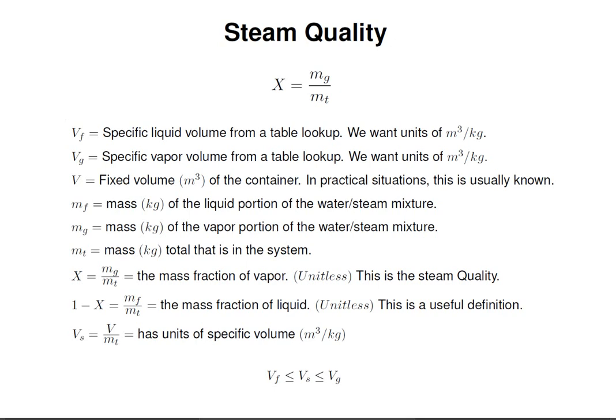V is a fixed volume in cubic meters of a container. In practical situations, we usually are given this. Mf is the mass in kilograms of the liquid portion of the water-steam mixture. Mg is the mass in kilograms of the vapor portion of the water-steam mixture. Mt is the mass in kilograms that is the total mass in the system, the liquid plus the gaseous or vapor portion.